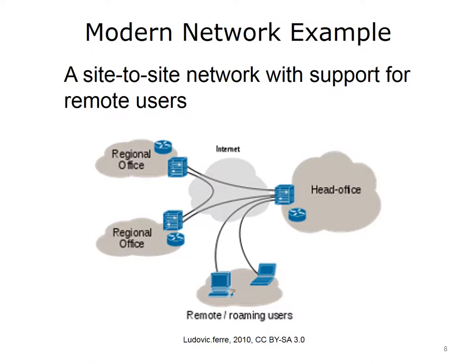To visualize what a moderate-sized network would look like, examine the figure on the screen, where you will see two regional offices connected to the head office. Remote users — employees who work at home or travel as part of their job — also need to connect to the head office. Note that all users are connecting through the Internet, and that the Internet service providers' devices shown in the figure are interconnecting all of the sites. Additionally, the routers at the regional offices are connecting to a router at the head office.